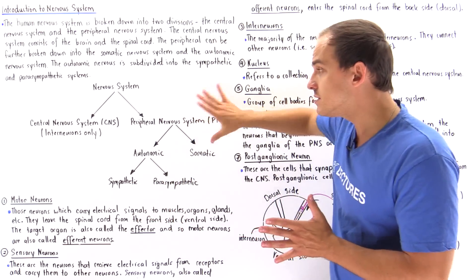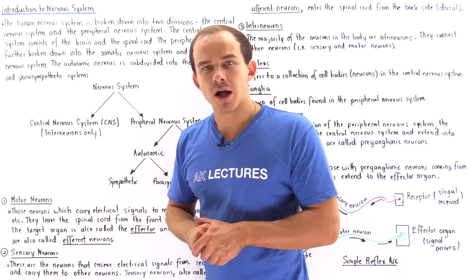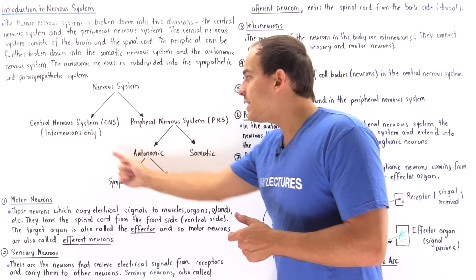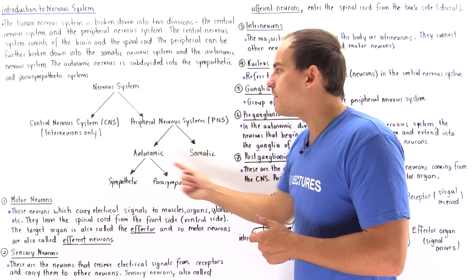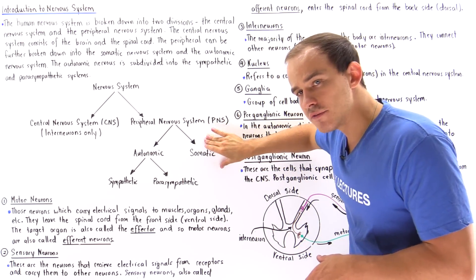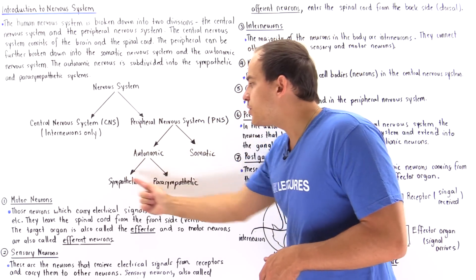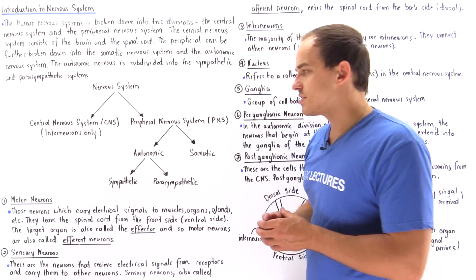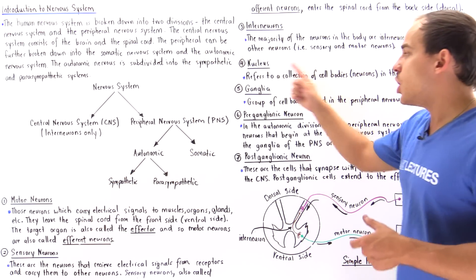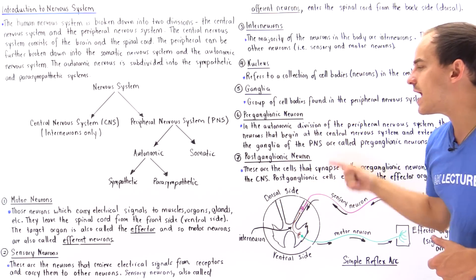The only types of neurons the peripheral nervous system contains are motor neurons and sensory neurons. We can subdivide the peripheral nervous system into the somatic nervous system and the autonomic nervous system. Within the autonomic nervous system, we have special types of motor and sensory neurons known as pre-ganglionic neurons and post-ganglionic neurons.